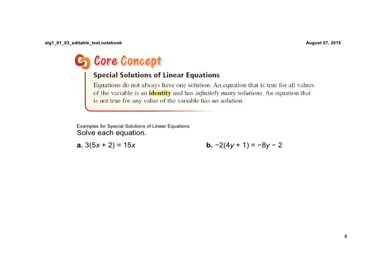When we have variables on both sides of the equal sign, there's actually two special cases that can occur. Equations do not always have one solution. An equation that is true for all values of the variable is called an identity and has infinitely many solutions. An equation that is not true for any value of the variable has no solution.